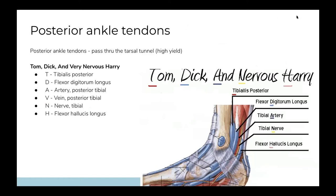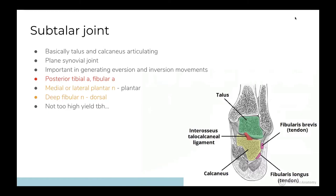The ankle is similar to the upper limb — instead of the carpal tunnel we have a tarsal tunnel, a fibrous sheath around this area. The contents are high yield — remember 'Tom Dick And Very Nervous Harry': tibialis posterior, flexor digitorum longus, flexor hallucis longus, and the posterior tibial artery and vein, and the tibial nerve. Compression here can cause tarsal tunnel syndrome, similar to carpal tunnel syndrome.